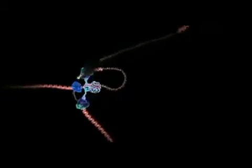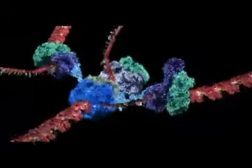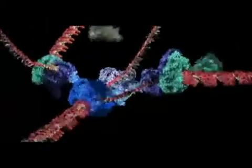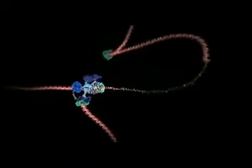One strand is copied continuously and can be seen spooling off to the right. Things are not so simple for the other strand because it must be copied backwards. It is drawn out repeatedly in loops and copied one section at a time.